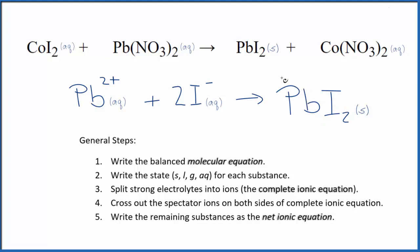This is Dr. V with the balanced net ionic equation for cobalt-2 iodide plus lead-2 nitrate. Thanks for watching. We'll see you next time.